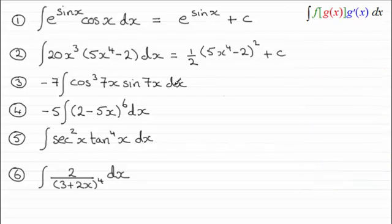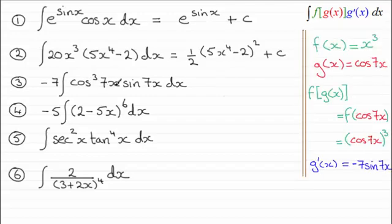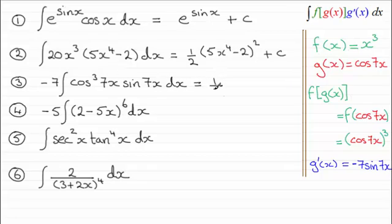With this next one, I can see that if I let g(x) be the cosine of 7x, then f(x) would have been x cubed. I notice that the differential of cos(7x), which I'm calling g(x), is minus 7 sin(7x). So I integrate f(x), which is x cubed — that gives me ¼x⁴. In place of x, I write in what g(x) was, which was cos(7x), so I've got cos(7x) all to the power 4 — written as cos⁴(7x) — plus the constant of integration, c.